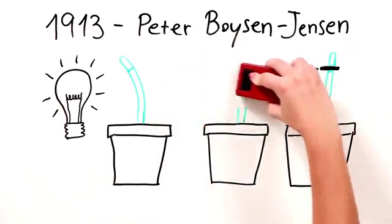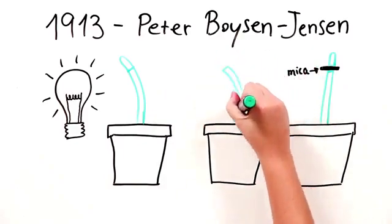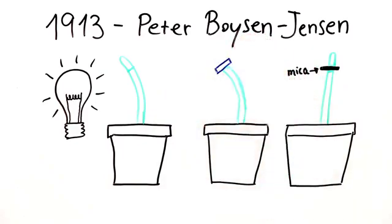In the first case, when the tip and the stalk are separated by a piece of gelatin, the plant still retained the ability to bend. Whereas when the tip was separated from the stalk by a piece of glass, it lost the ability to bend to light. It lost the ability to respond to light, to do phototropism.